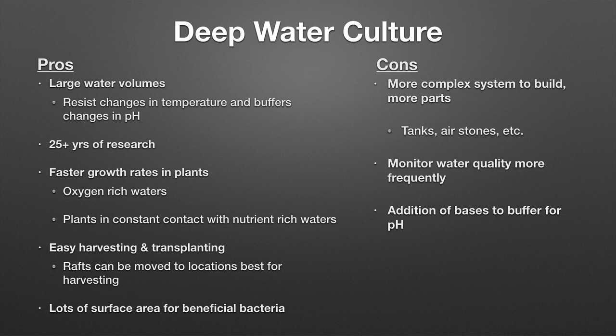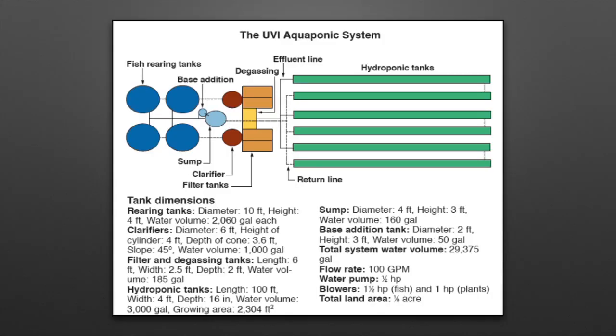What are the cons of deep water culture systems? They're more complex to build — more parts, more tanks, more air stones, more water flow management — making them a bit more expensive. You have to monitor water quality more frequently and add bases to buffer the pH that's constantly dropping. For a larger commercial-style environment, like a high tunnel design where you're looking to sell crops, this is generally the type of culture system we recommend. But if you're looking at a classroom environment, the media-based systems might be better for you.